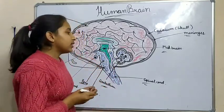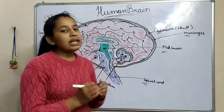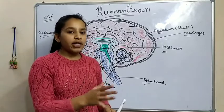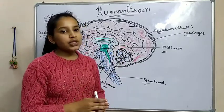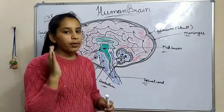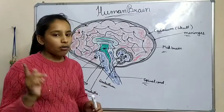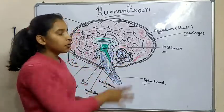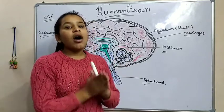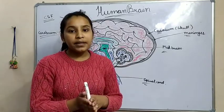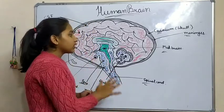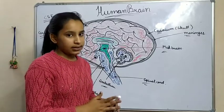First, thalamus. The thalamus gives signals to our body from the brain — its function is to transfer messages from the brain to our body. The next is the limbic system, which is also present in the forebrain. The limbic system controls fear, hunger, and our habits.